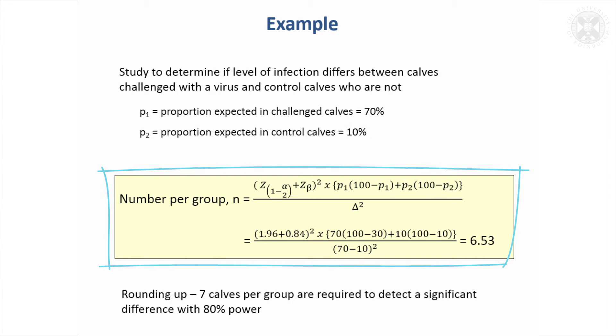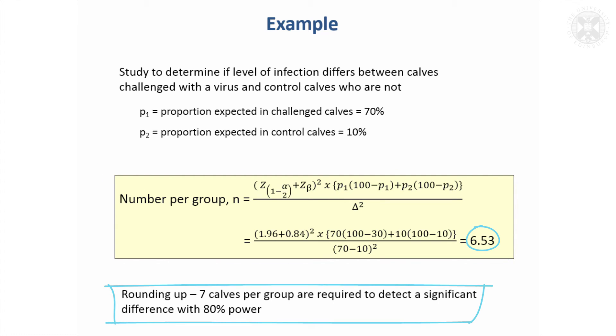The number you need to do that, put it into the formulae, we'll deal in terms of percentages here. So we have a hundred coming in. And that would come out to be 6.53. So seven calves per group are required to detect a statistically significant difference with 80% power, because the Z beta we've put in is 0.84, and that's the value that relates to 80% power.